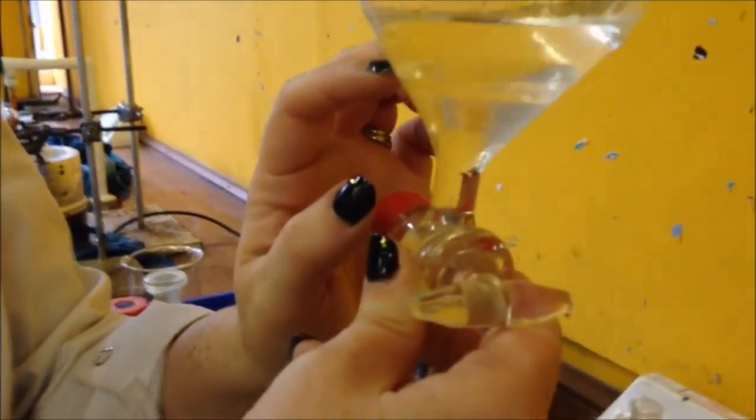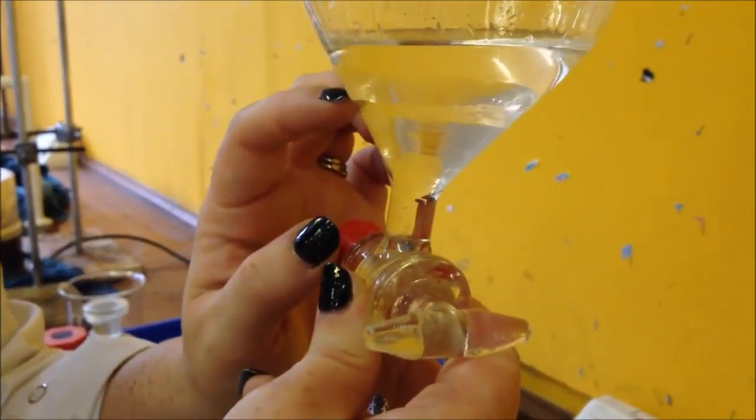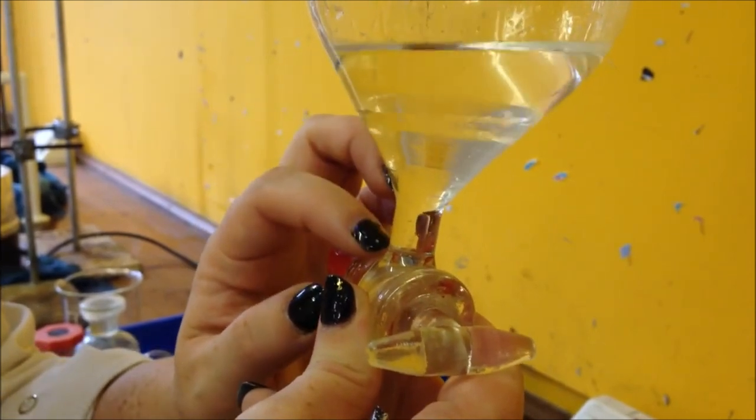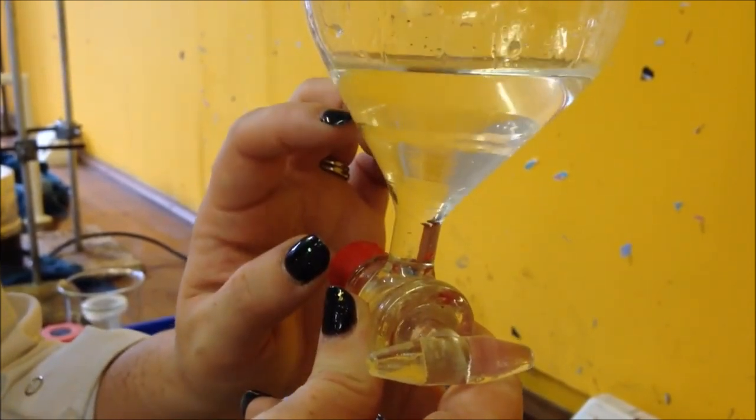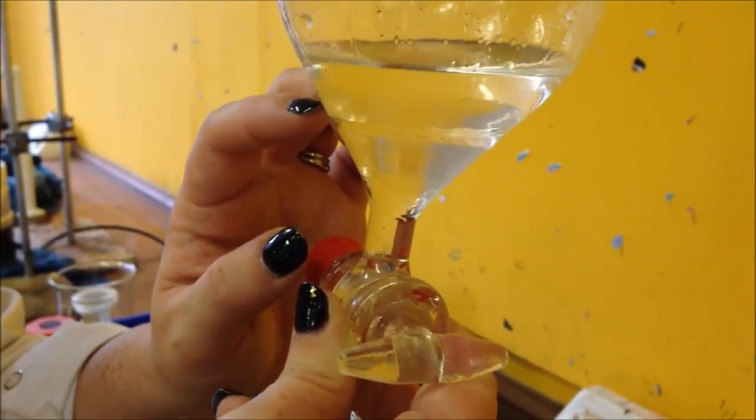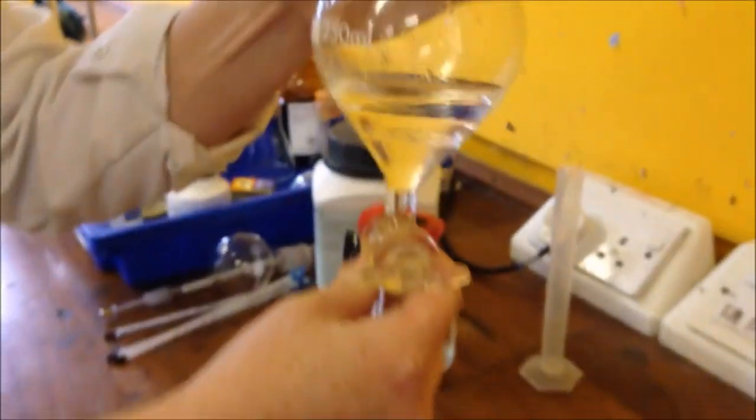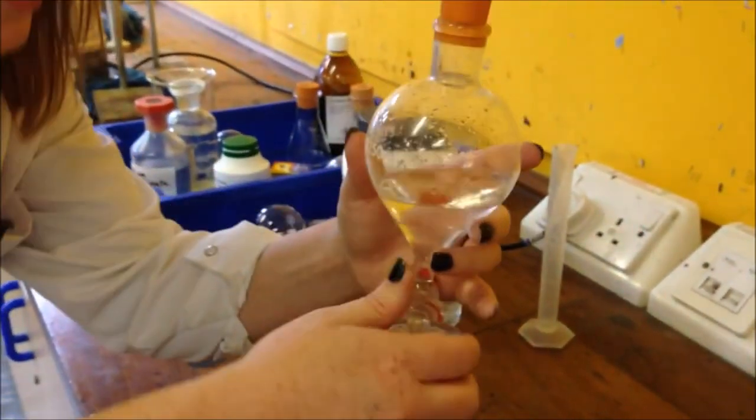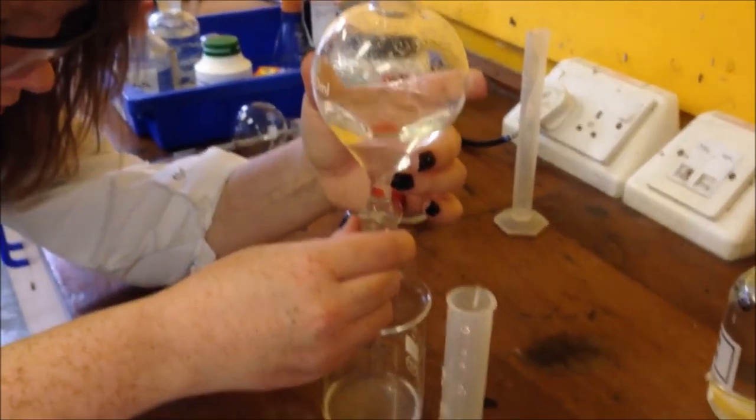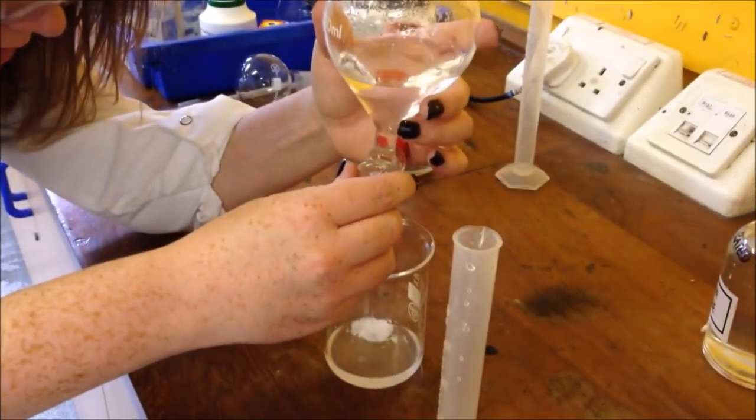So again we can see two layers separating out here. And again I want to discard the lower layer. So I'm just going to run this off until the layer has gone all the way through. So I'm just going to release a bit of pressure at the top and start running that down there.